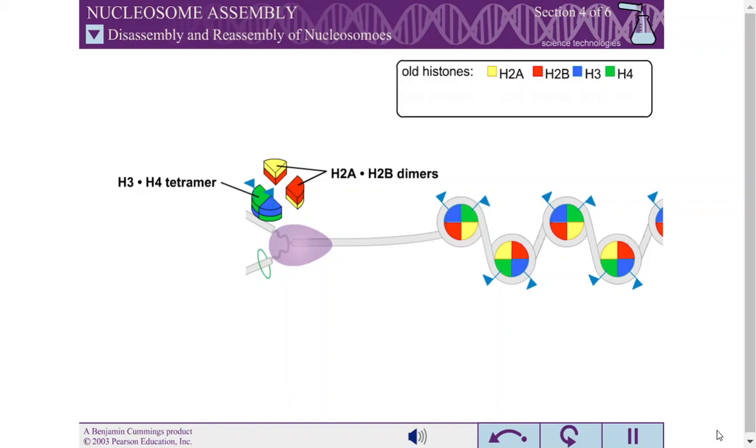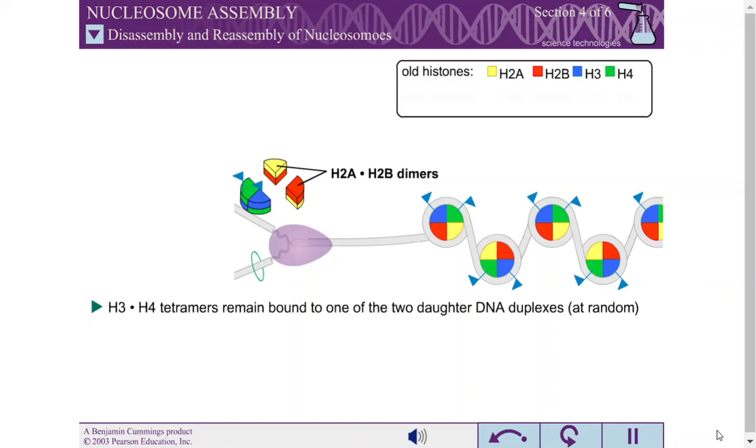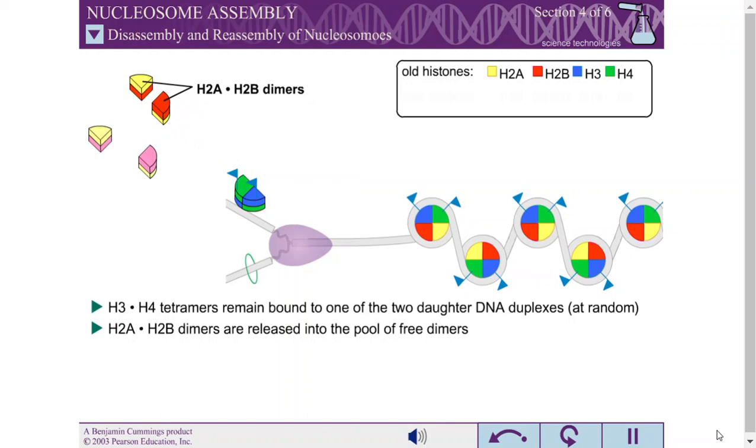The H3-H4 tetramers remain bound to one of the two daughter DNA duplexes at random. The H2A-H2B dimers remain intact but are released into the pool of free dimers surrounding the replication fork.